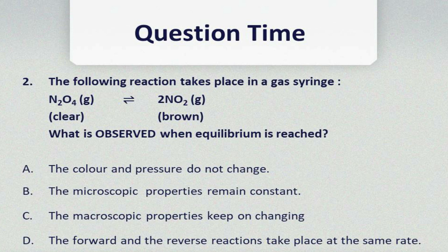Let's look at number two. The following reaction takes place in a gas syringe: N2O4 giving you NO2. We can see that N2O4 is a clear gas and NO2 is brownish. What is observed when equilibrium is reached? Remember, we have spoken about the point where the rate of the forward reaction is equal to the rate of the reverse reaction, and where the concentration of reactants equals the concentration of products.